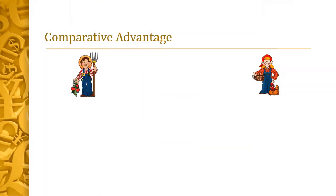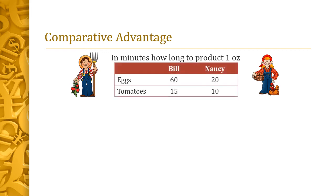You might wonder how Farmer Bill could be better than Nancy at anything. Looking at the data, Nancy is faster at making both eggs and tomatoes — she can produce more in eight hours. However, in economics the question is not who can do it faster, but who can produce at a lower cost. There are two types of costs we look at: absolute advantage and opportunity cost.